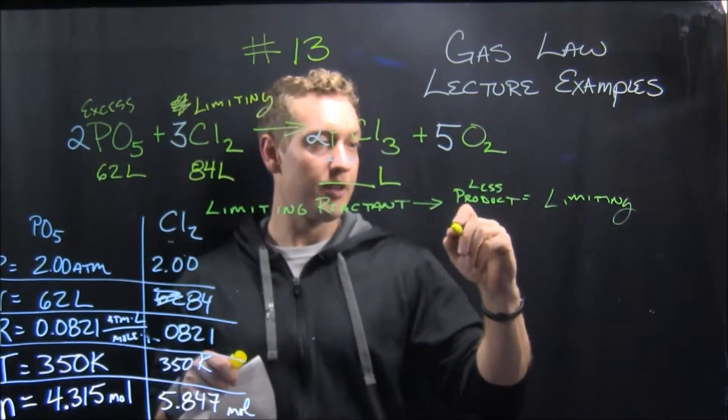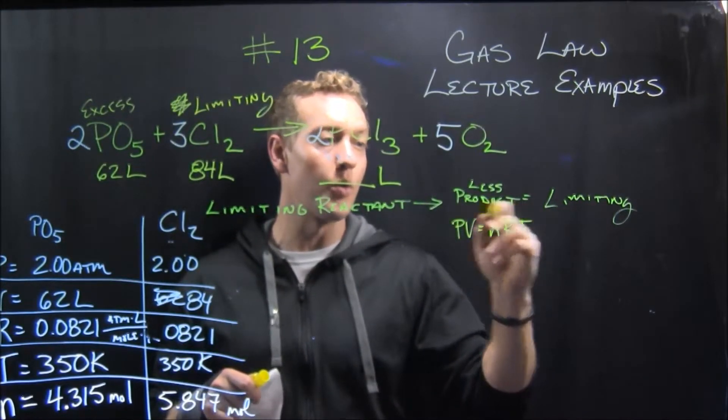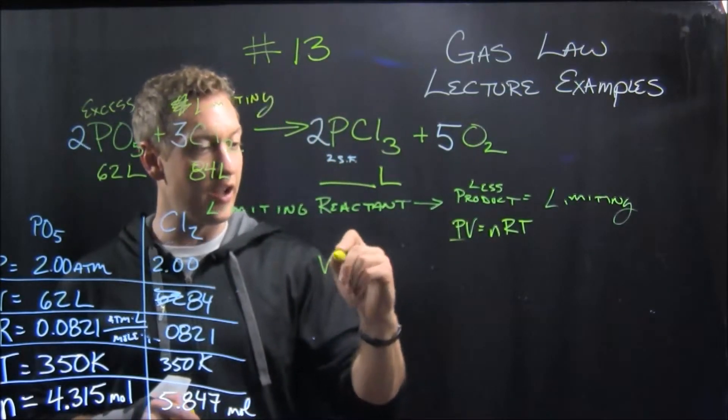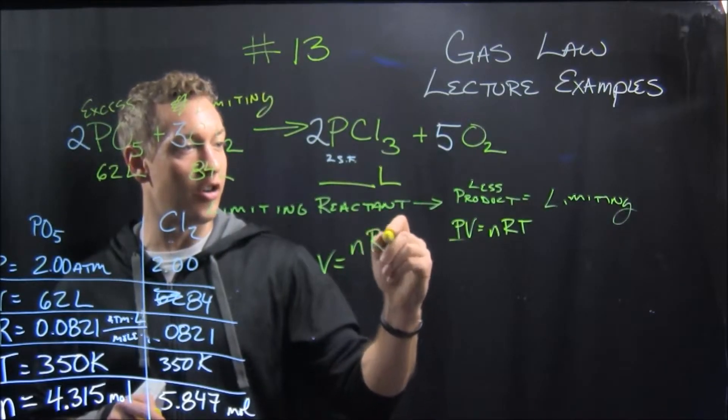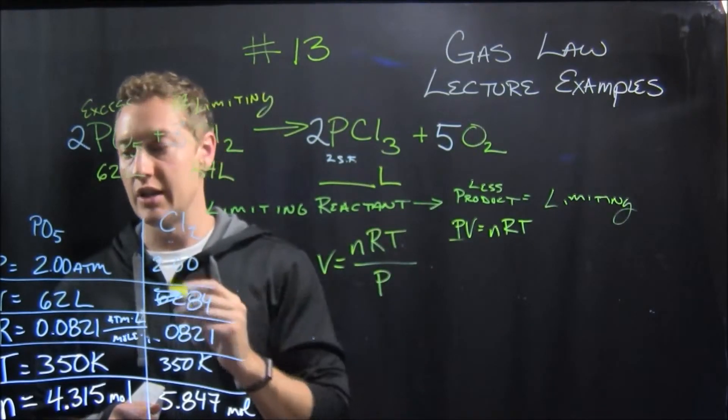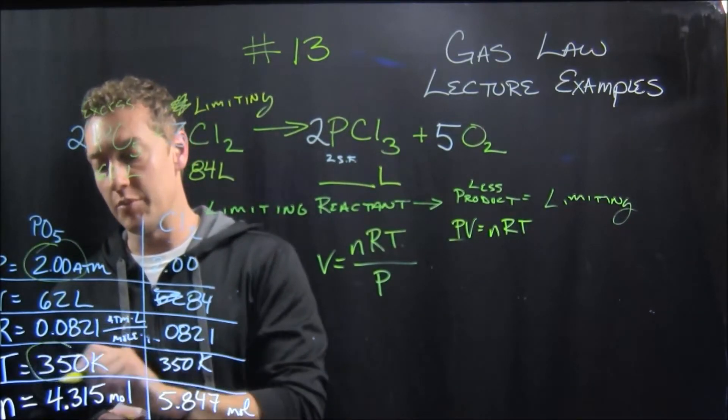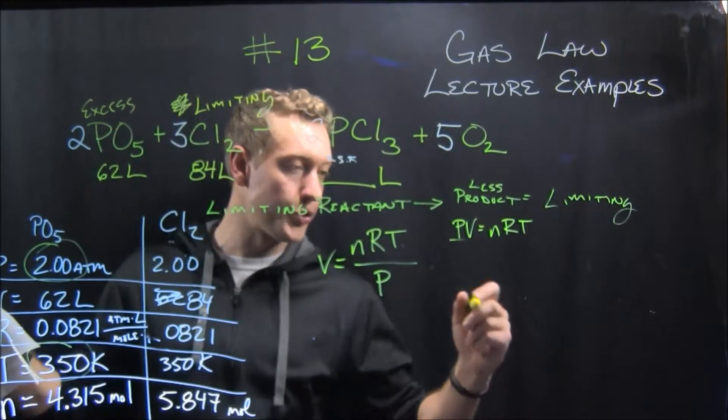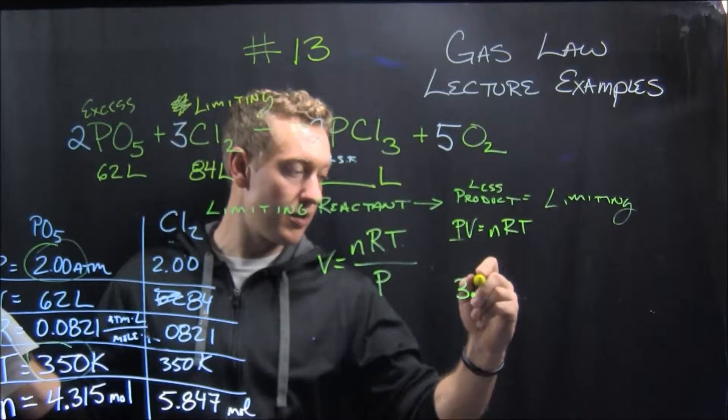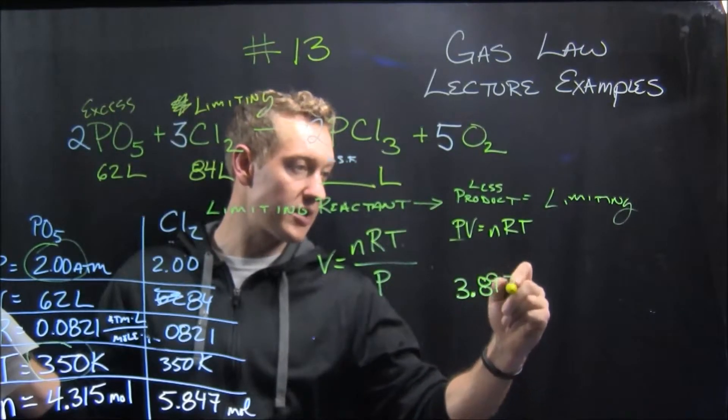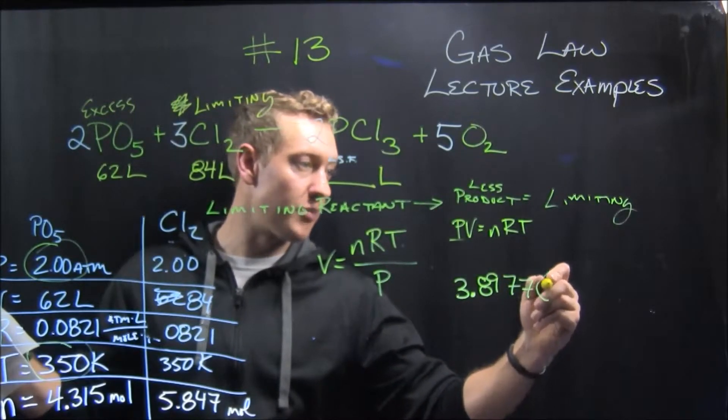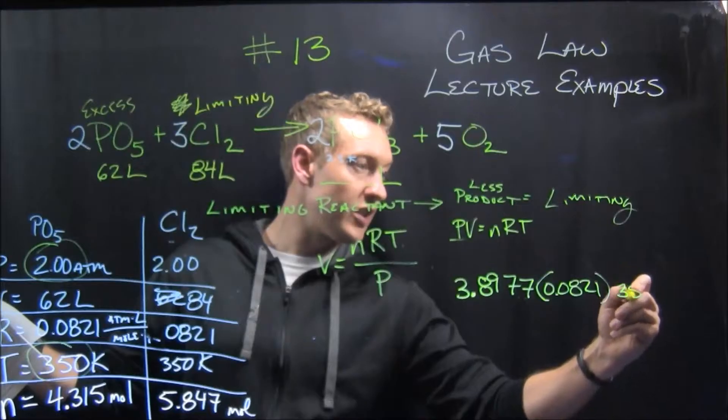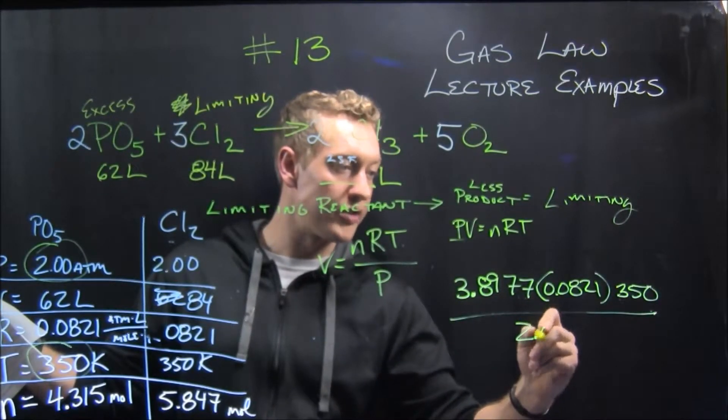So if we take PV equals NRT, and we want volume, you're going to divide P over to that other side, so you end up with volume equals NRT over P. Conditions are the same, so it's still 2 atmospheres. Temperature's still at 350 Kelvin, so we're going to plug it in. Our number of moles was 3.8977 times 0.0821 times 350 divided by 2.00.